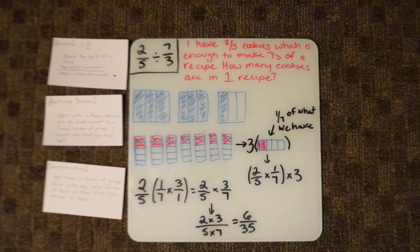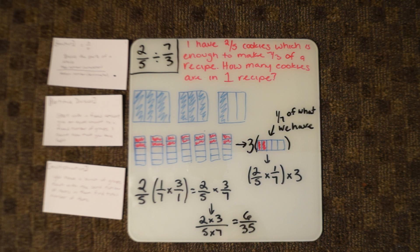We're looking to find out how many pieces are in one whole. Our equation today is 2/5 divided by 7/3. As a word problem, I have 2/5 cookies, which is enough to make 7/3 of a recipe. How many cookies are in one recipe?